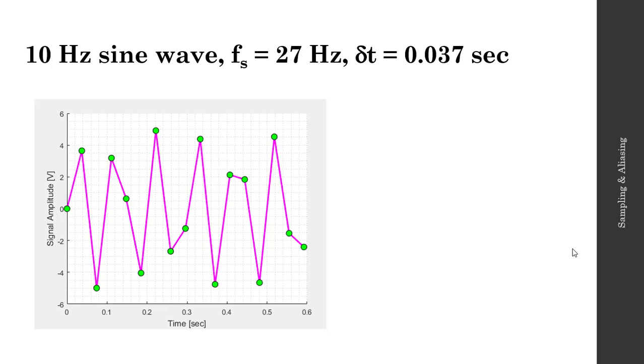Although, I think you'll also agree this sampled signal at 27 Hz is not nearly as good, it's not telling us nearly as much information as our signal that was sampled at 100 Hz. But the representation is still quite good.